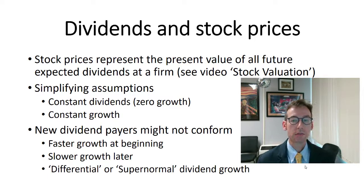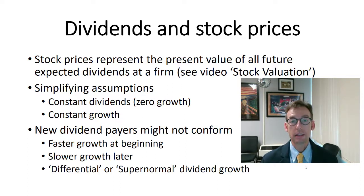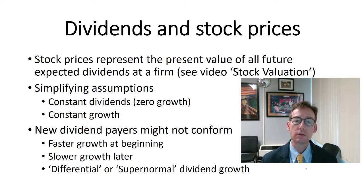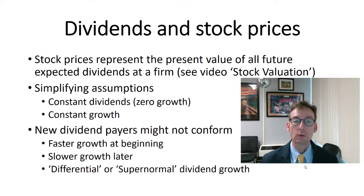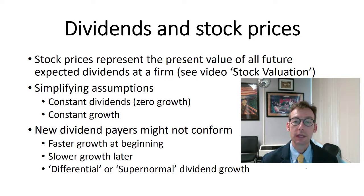Let's talk about the relationship between dividends and stock prices. We know that the price or value of anything is the expected value of the future cash flows discounted at a rate appropriate to the risk. So what are the future cash flows for stocks? Well, the dividends and then the price when you sell them. Let's assume that we just let the stock go on forever and ever, because of course stocks never mature. Then all we're really looking at is the sum of all the present values of all the dividends received over the stock's life. And so that's what we say stock price should be: the sum of all the present values of all the expected dividends the stock will ever pay.